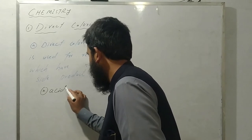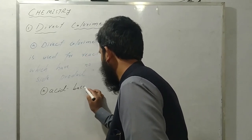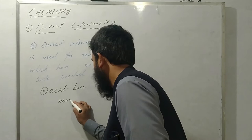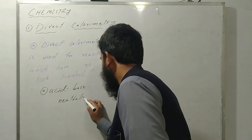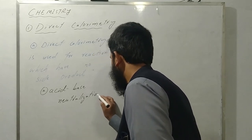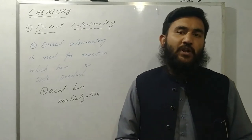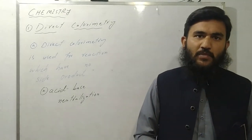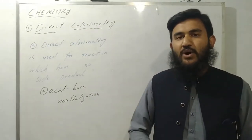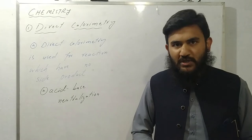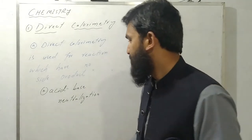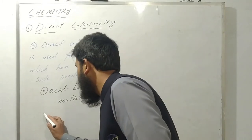Direct calorimetry hum un reactions ke liye use karenge jinmein koi side product na ho, main product hamara complete bane. Jaise ke acid-base neutralization — acid-base neutralization reaction mein koi side product nahi hota. Is tarah ki reaction mein heat changes ko aap direct calorimetry ke through find kar sakte hain.